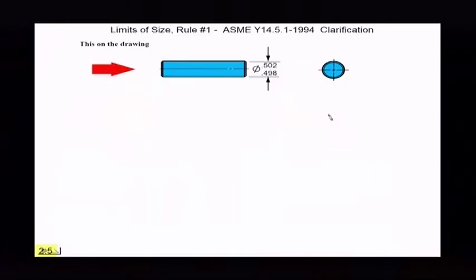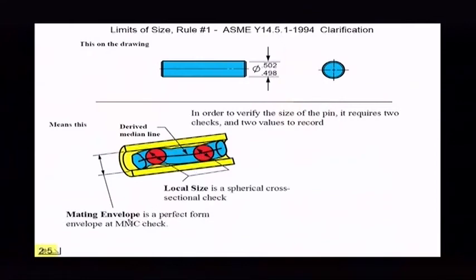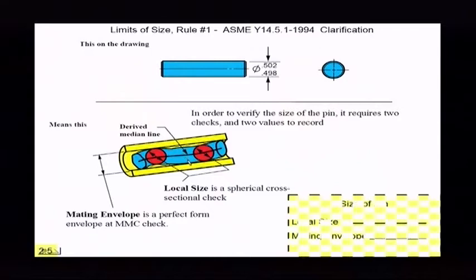And then we clarify that again in the Y14.5.1 standard that really clarified it. In order to verify it, it really requires there's two values there. There's one that we call the mating envelope, which we used to call mating size, and now we have the local size. And Y14.5.1 says that you drag a sphere through it and no part of the sphere can exit the material. So there's really two values to record. Local size and what we call a mating envelope.